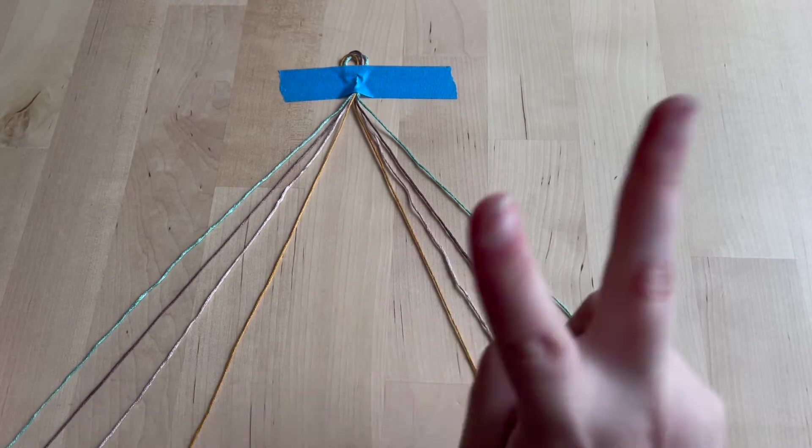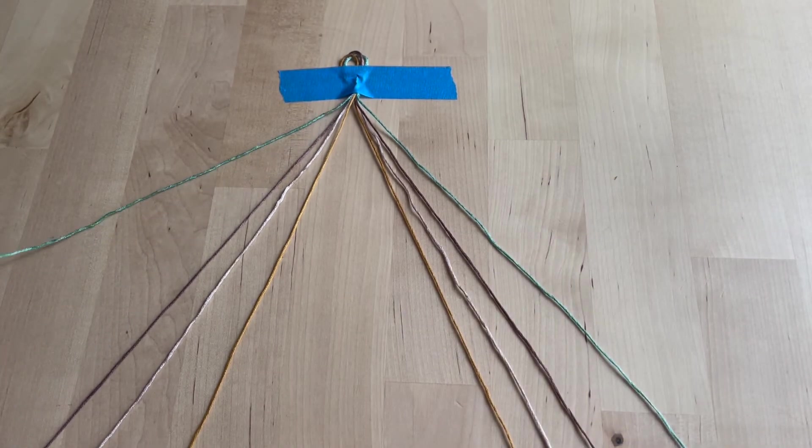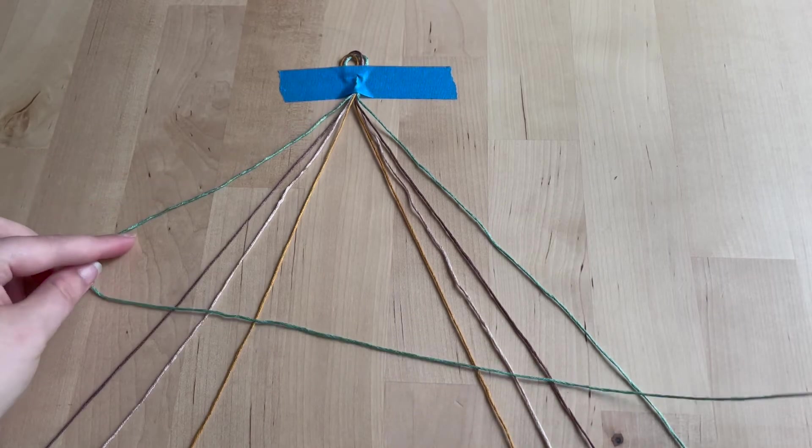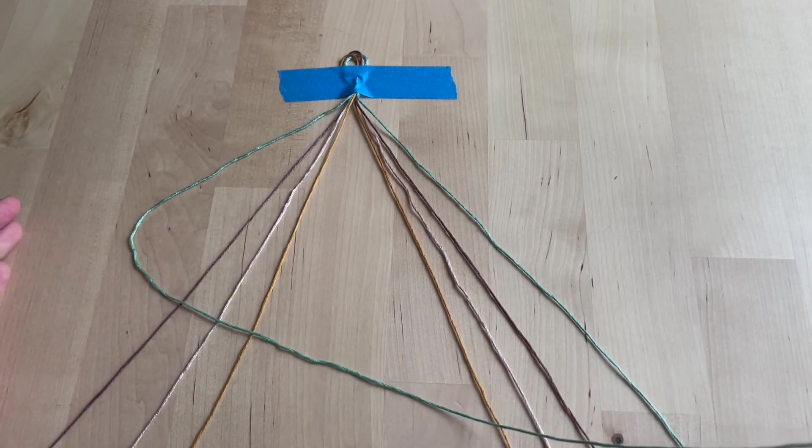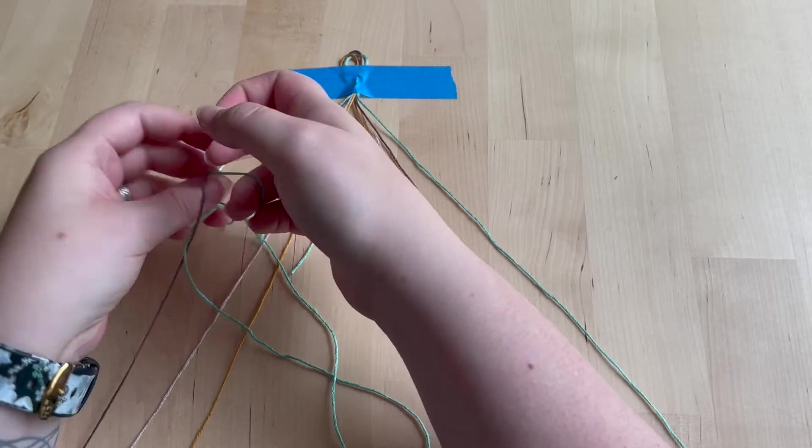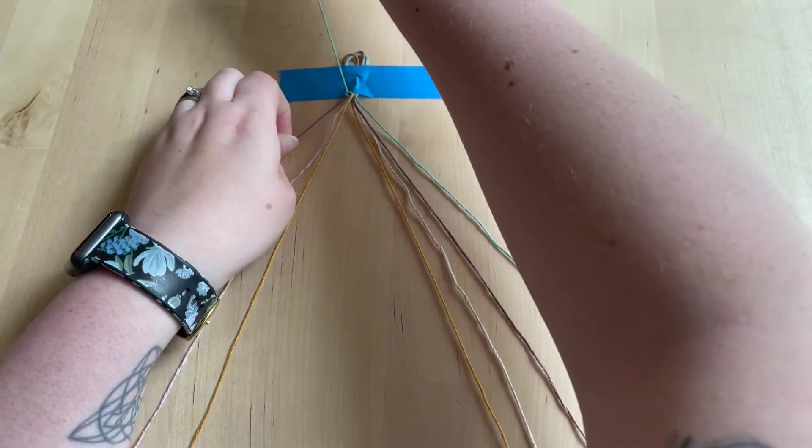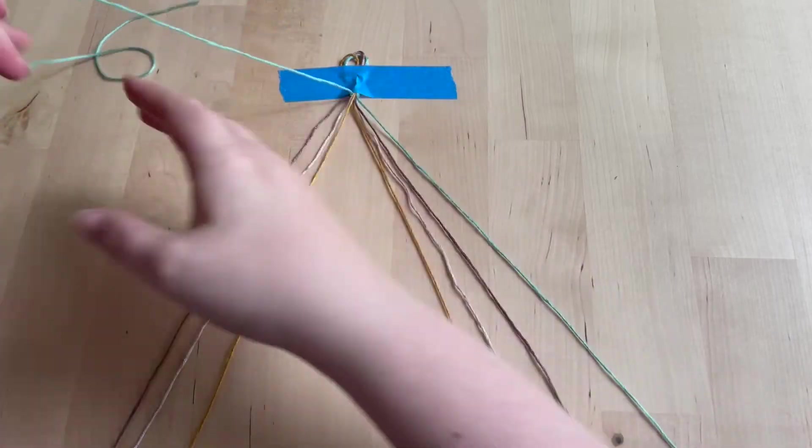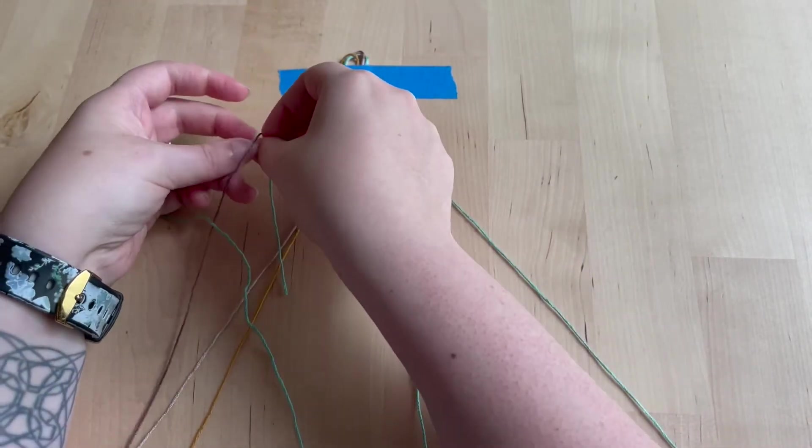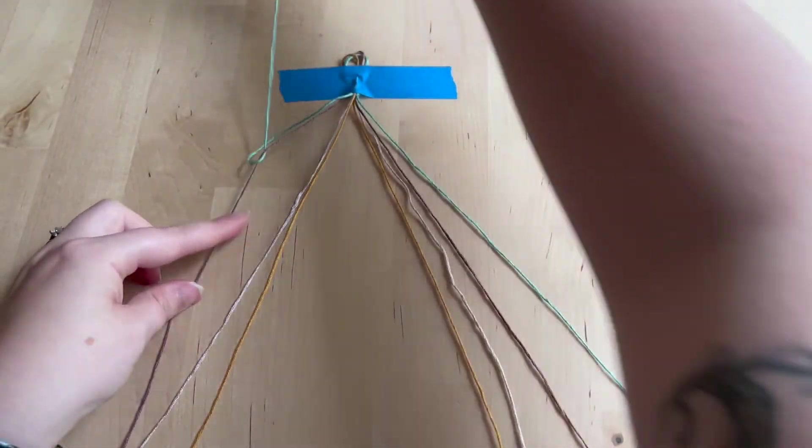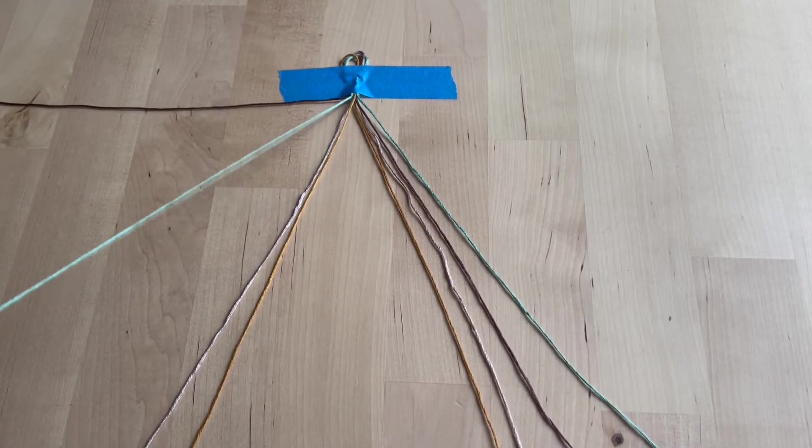There are two knots that we need to know in friendship bracelet making. The first one we're gonna do is the forward knot, and you can remember it's the forward knot because you make the number four to make it. Take your leftmost strand, make a four, and then stick the end of that strand through the loop you made, and you have a knot. Now we're gonna do that again because every knot in friendship bracelet making is doubled. It's really just one forward knot doing this twice. Now your strand that was your leftmost strand will be inside.